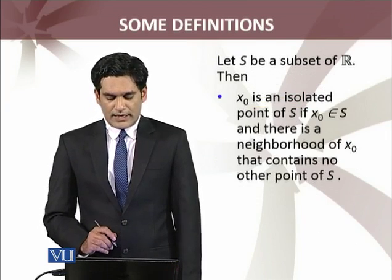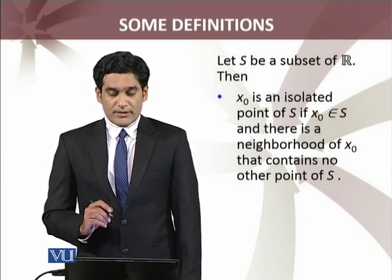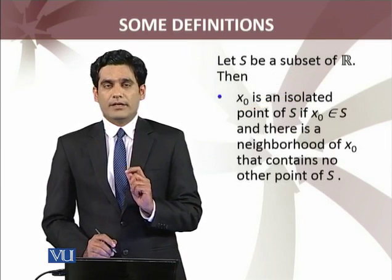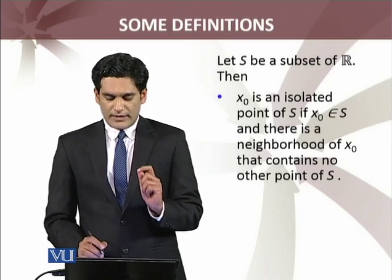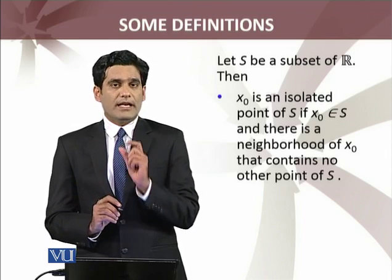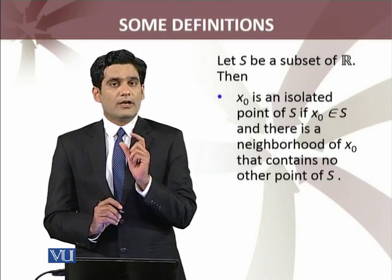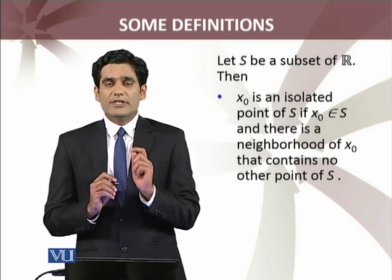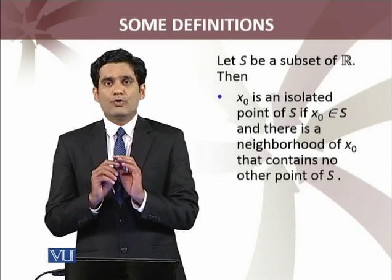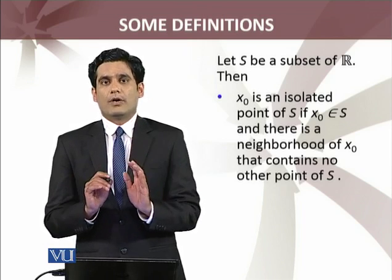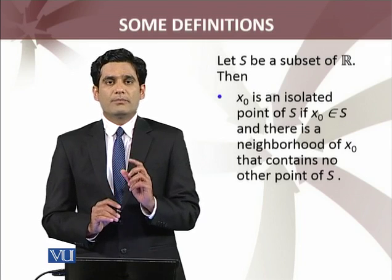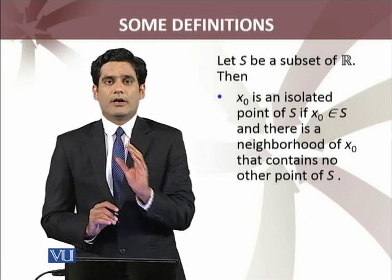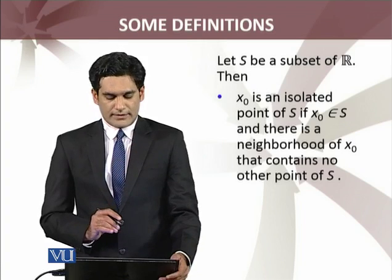Let S be a subset of R. Then X₀ is an isolated point of S if there exists a neighborhood of X₀ such that no other point of S lies in that neighborhood besides X₀ itself. यानि X₀ के इलावा उस neighborhood में S का कोई point नहीं होना चाहिए।